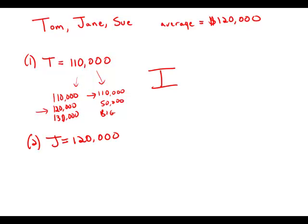Well that's interesting because that is the average, and so if Jane is at the average of $120,000, then there's only two other possibilities.